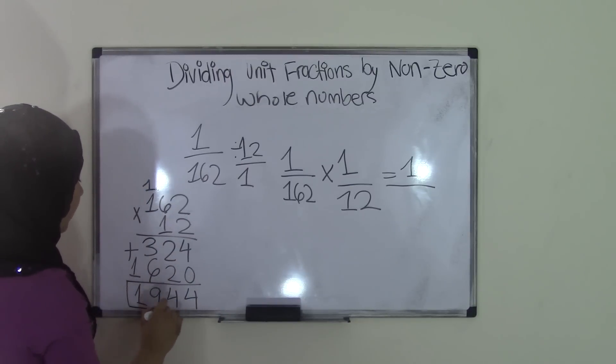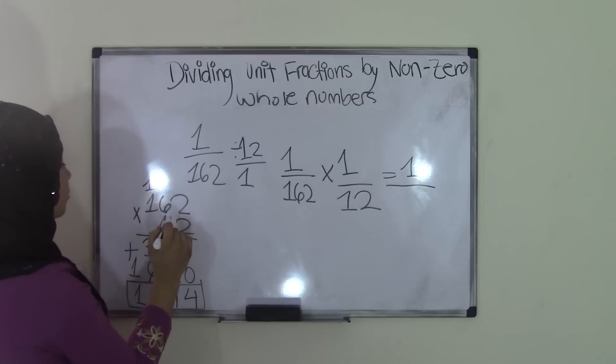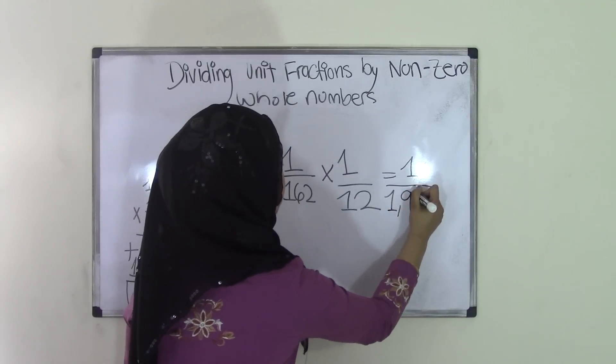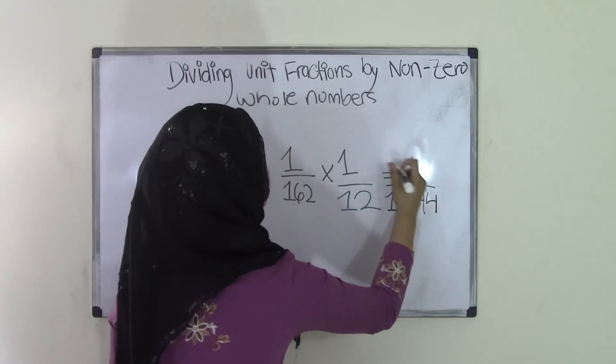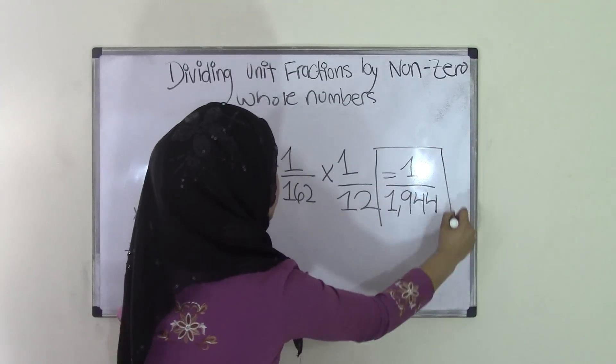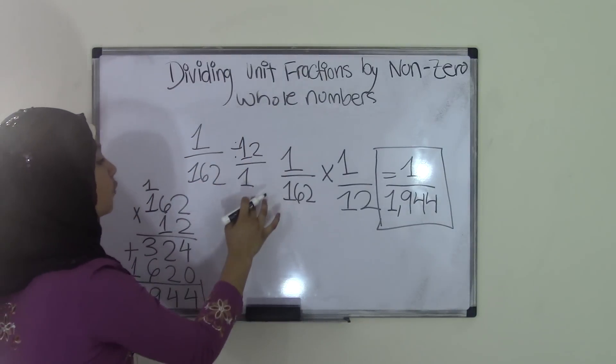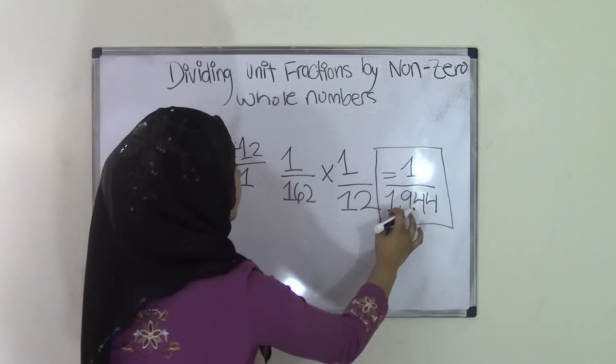So our product for 162 times 12 equals 1,944. And that becomes our denominator, 1,944. So that means the quotient for 1 over 162 divided by 12 over 1 equals 1 over 1944.